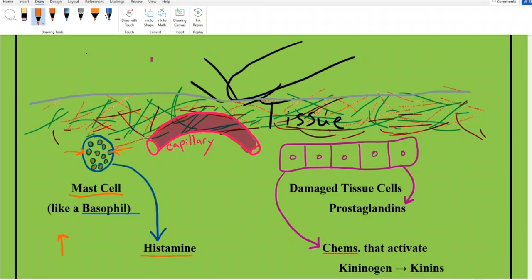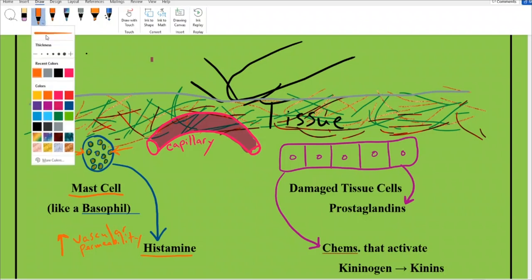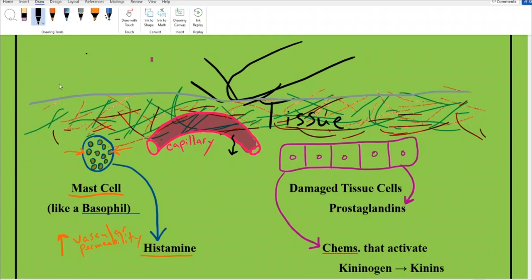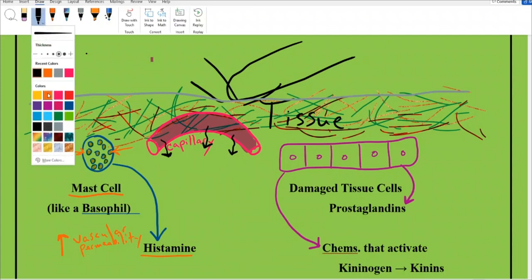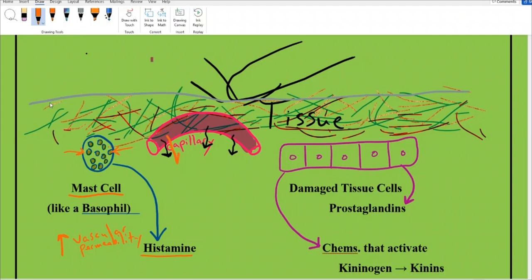What does histamine do? Histamine will increase vascular permeability. What does that mean in English? It's going to make your capillaries leak more. All of our capillaries leak, that's why we have a lymphatic system. Here is my capillary leaking in my tissue. When histamine comes in, that just makes more leaking from my capillaries.